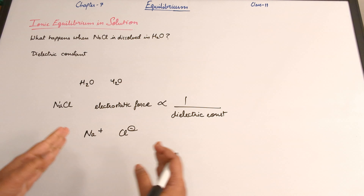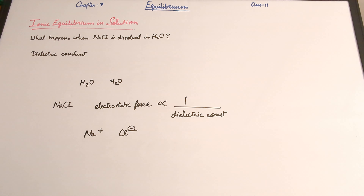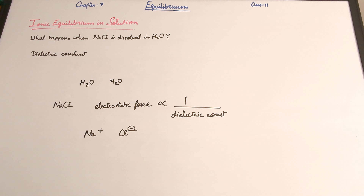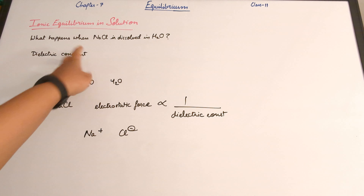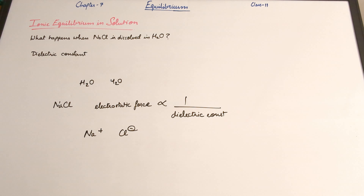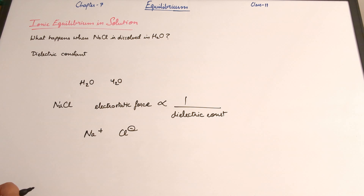In the previous video, we had an introduction to ionic equilibrium in solutions. In this one, we are going to briefly discuss what happens when sodium chloride is dissolved in water. The reason I thought it was important to separate it out was because it was present right after the introduction of what an acid, base, and a salt is, and I didn't want this to be right after that, so I instead put it right before.